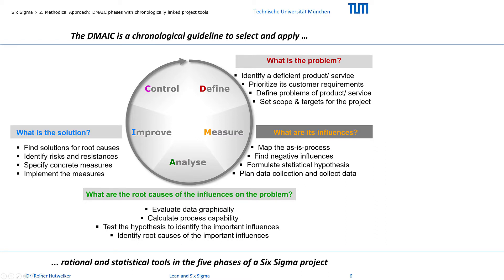In the improve phase we answer the question: what is the solution? At first, solutions are developed to eliminate, adjust, or circumvent the identified root causes. Risks and resistances against these solutions are then identified and the solutions are adapted to put them into practice.